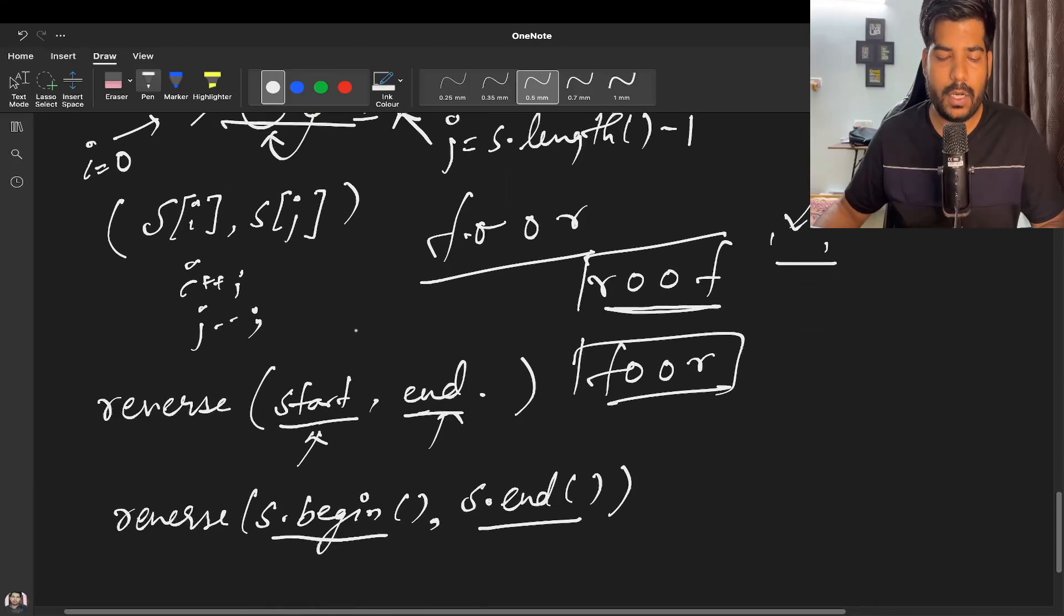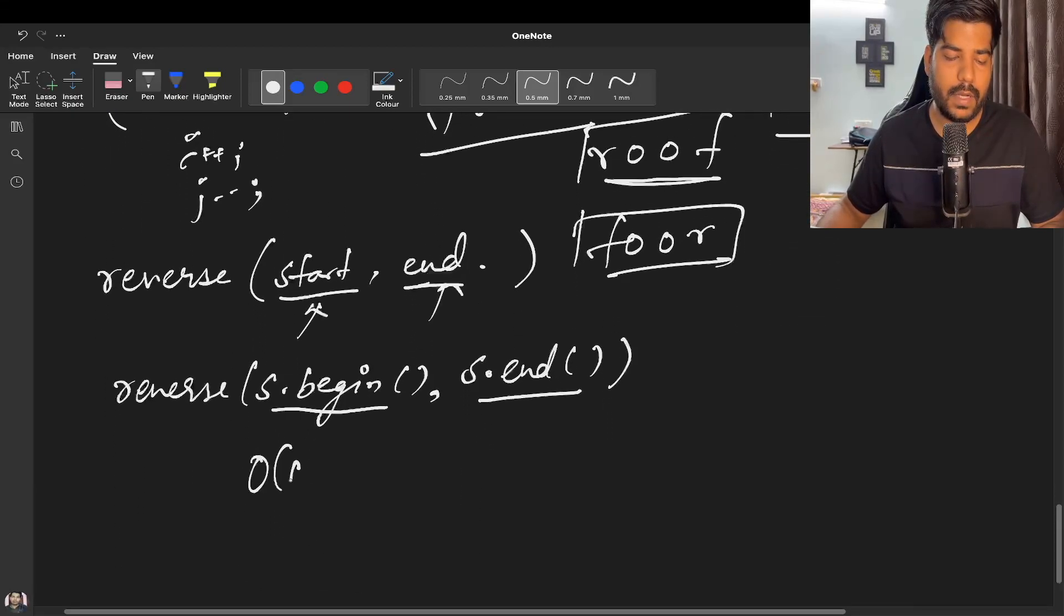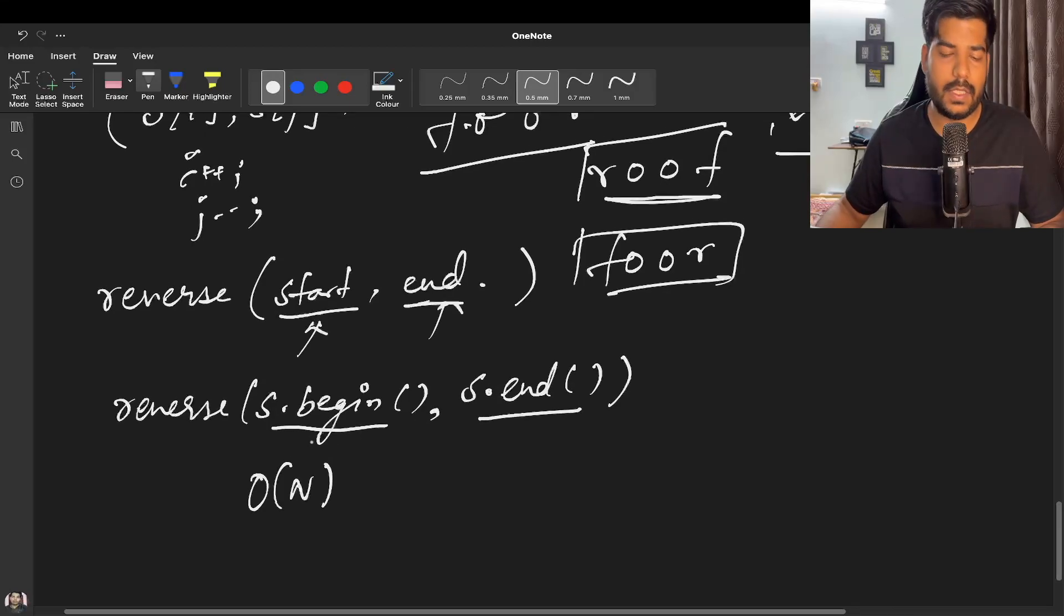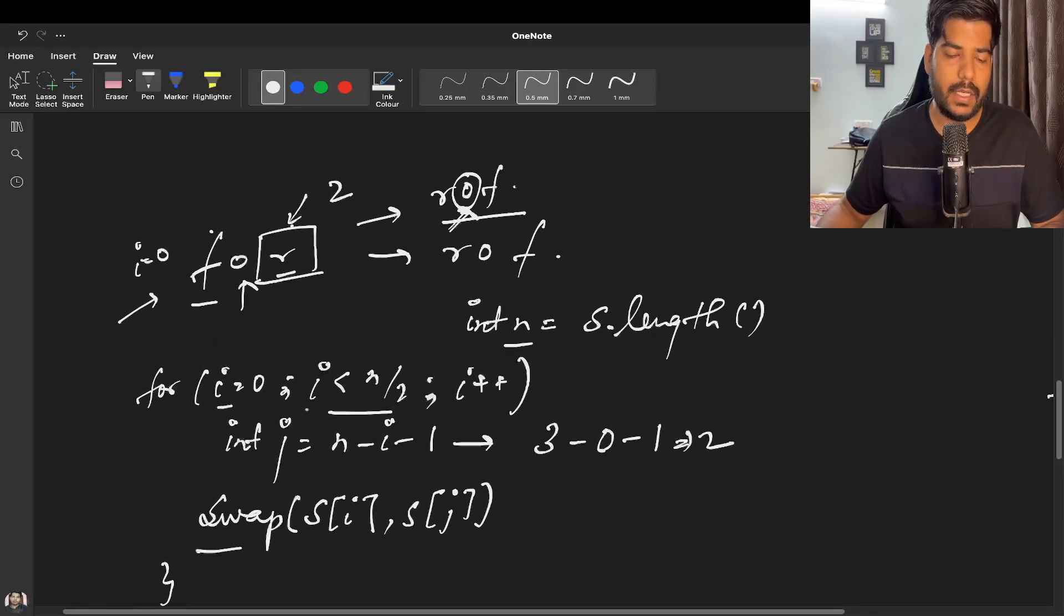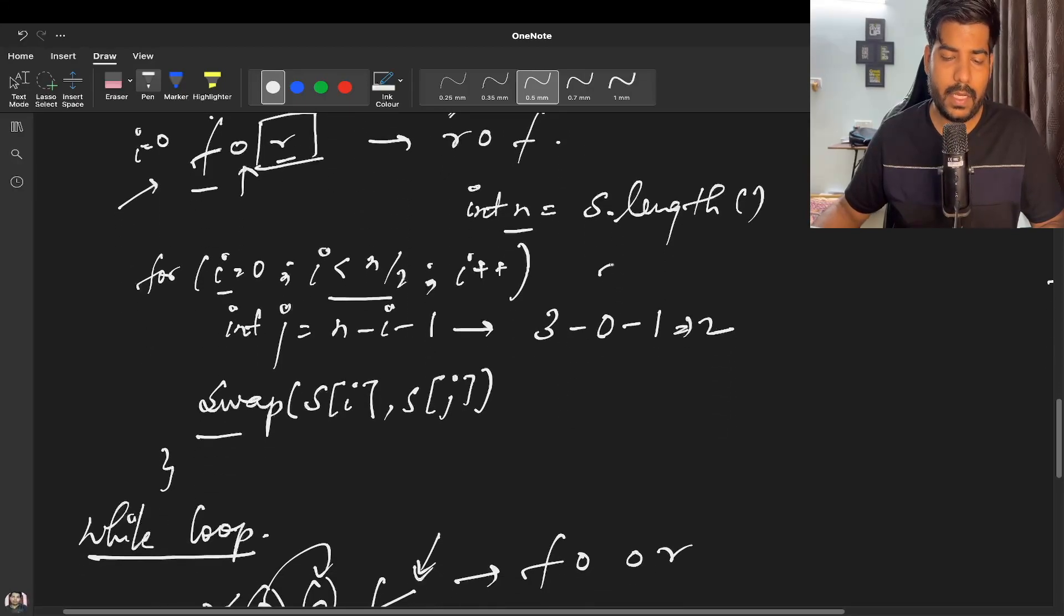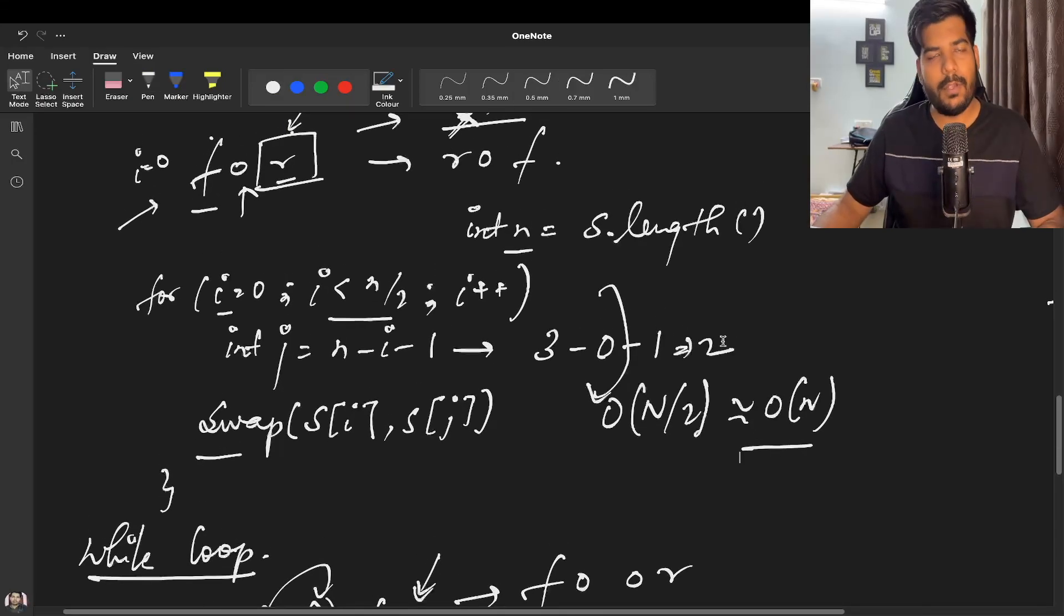What time does it take? It takes O(n) time, where n is the length of the string. Every method here is taking O(n) time. If you specifically talk about the for loop method, it's O(n/2), which is approximately O(n). I hope you've understood the solution.